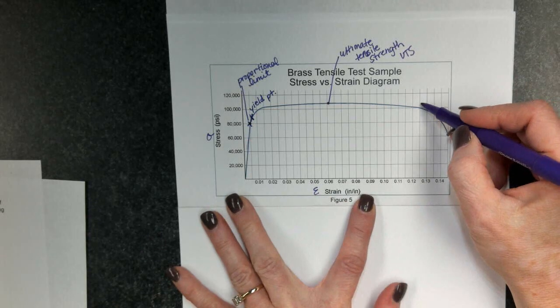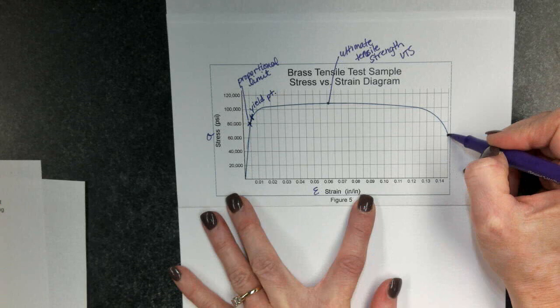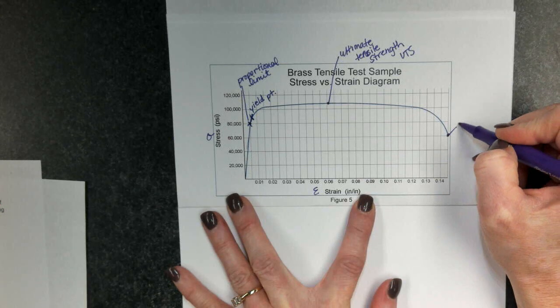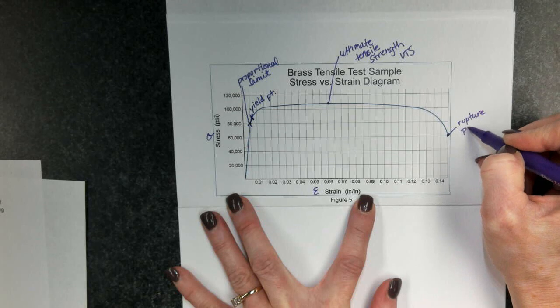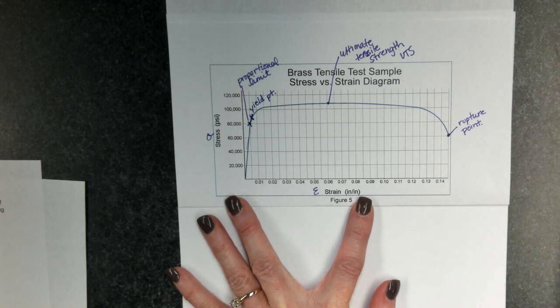And then here at the end, finally we have strained it so much that it breaks apart, and this is called the breaking point, or the rupture point. And this is where we experience failure of the material.